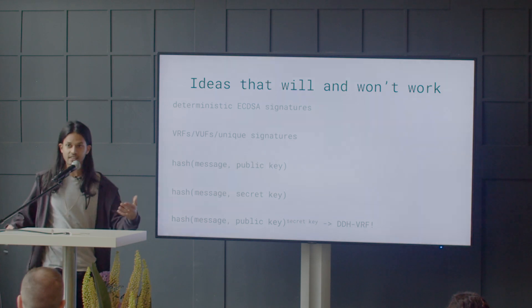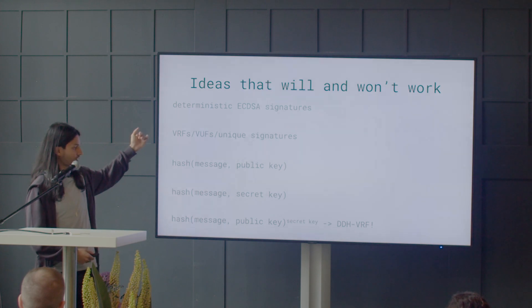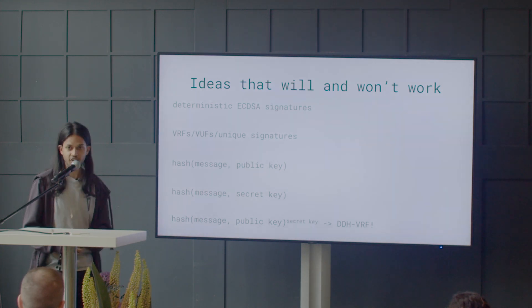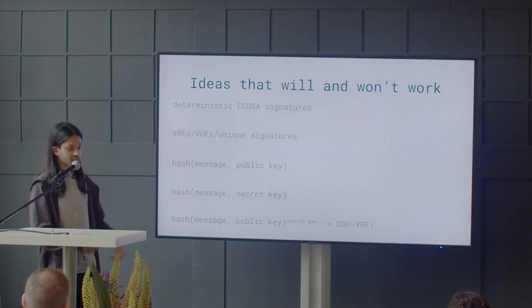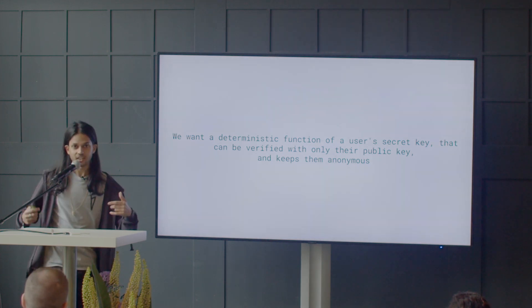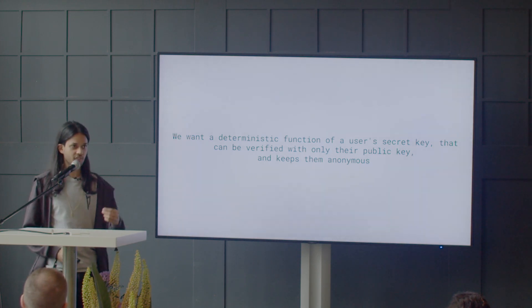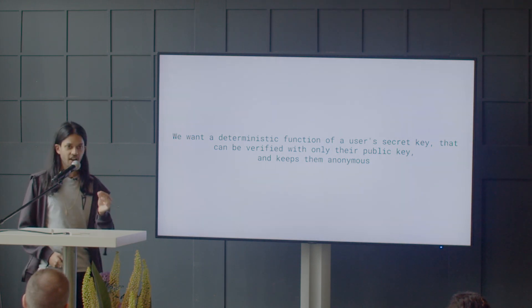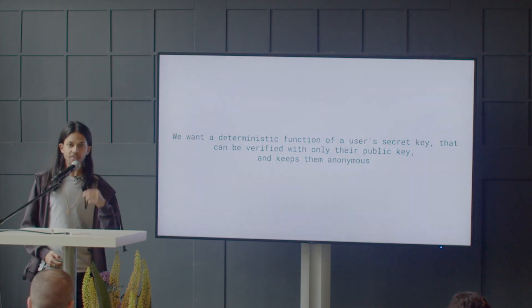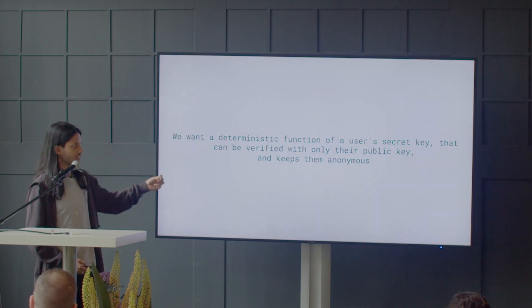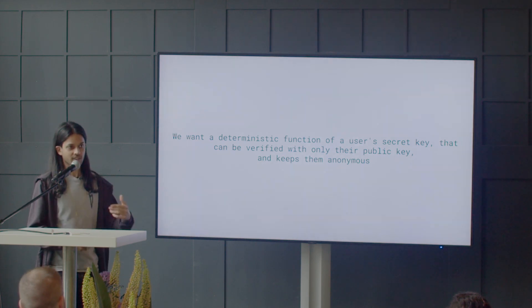The DDH-VRF gives us all the properties we want: it's unique, deterministic, non-interactive, and while it might seem like you need the secret key to verify this, we actually came up with an algorithm where you don't need the secret key to verify it was calculated correctly. To summarize: we want a deterministic function of a user's secret key that can be verified with only their public key, yet keeps them anonymous — and the verification can be done with a public key inside of a ZK-SNARK.